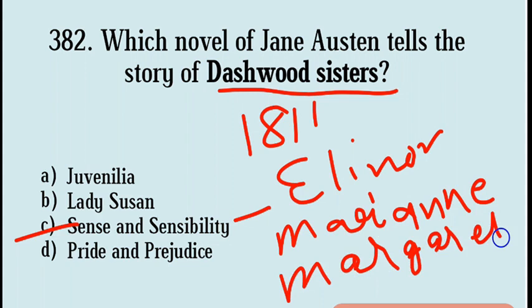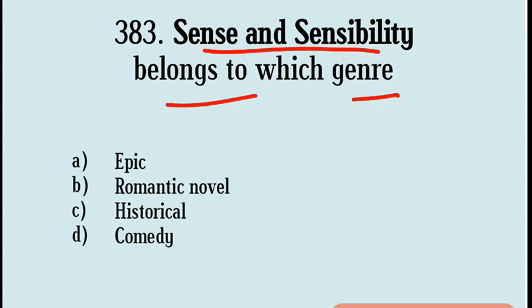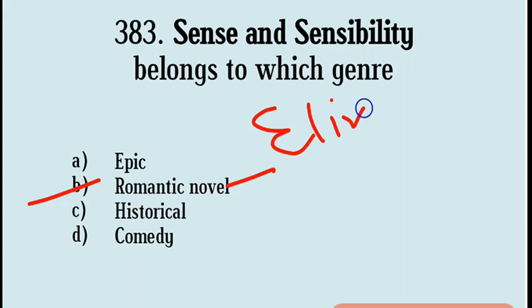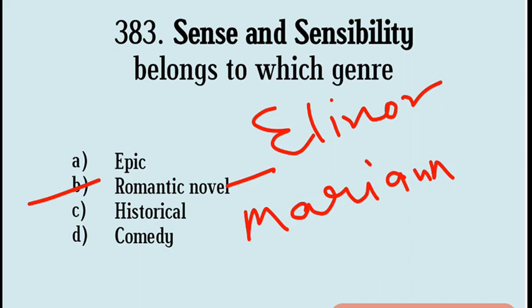Next question: Sense and Sensibility belongs to which genre? Options are Epic, Romantic novel, Historical comedy. Correct answer: Option B, Romantic novel. Both Elinor and Marianne strive for love while the circumstances in their lives constantly change.